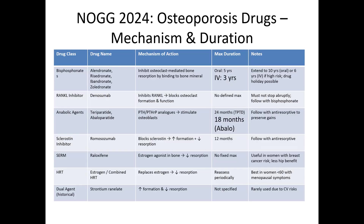Next is HRT — estrogen and combined HRT — which replaces estrogen and decreases resorption. Maximum duration requires periodic reassessment; it is best in women under 60 with menopausal symptoms. Finally, strontium ranelate — now largely of historical use — both increases formation and decreases resorption, with no specified maximum duration. It is rarely used nowadays due to increased cardiovascular risk.